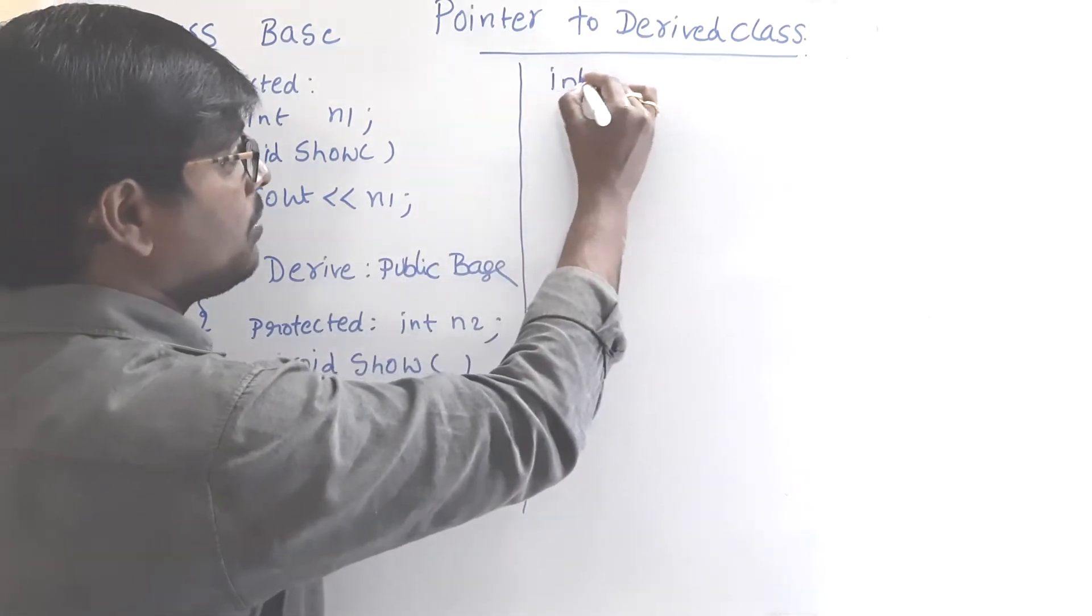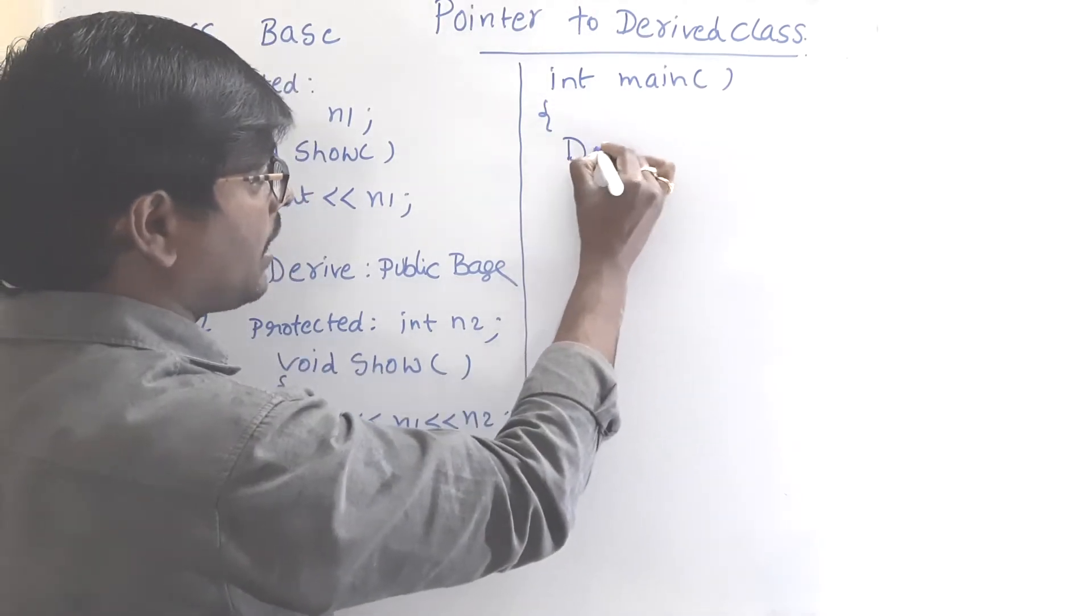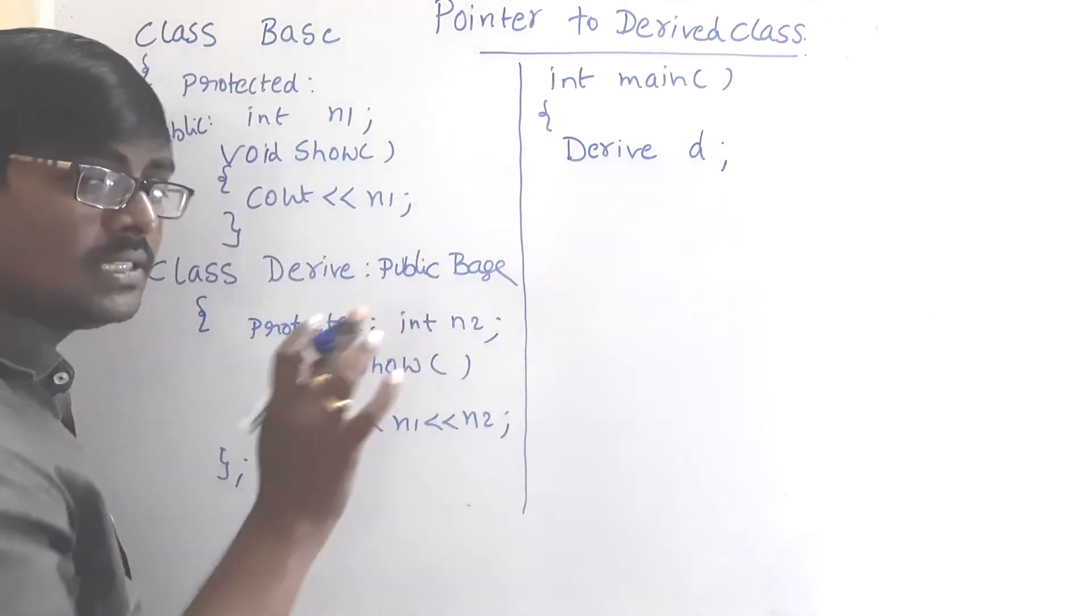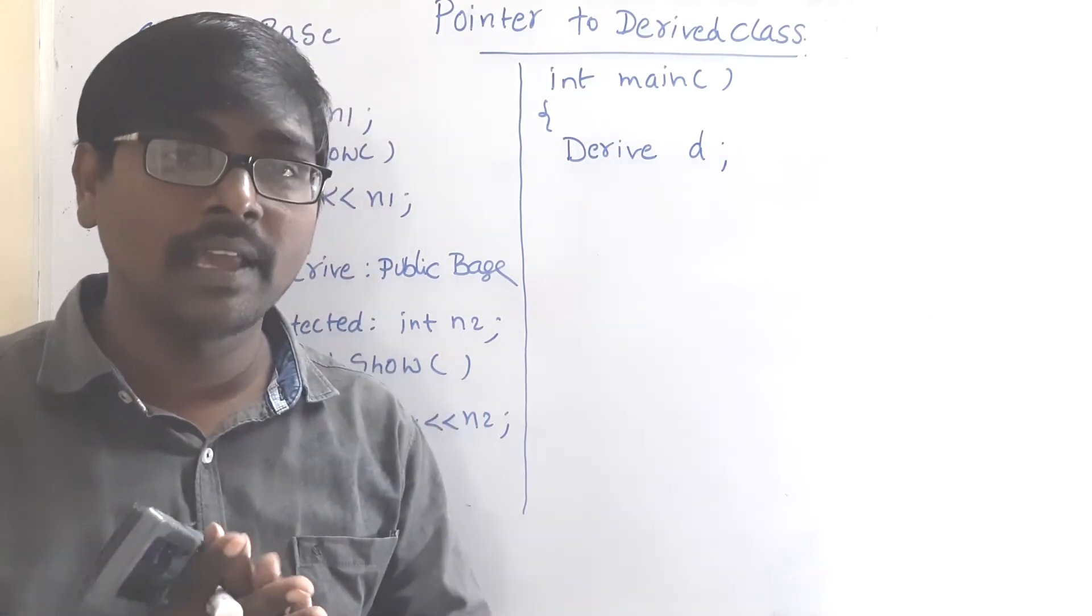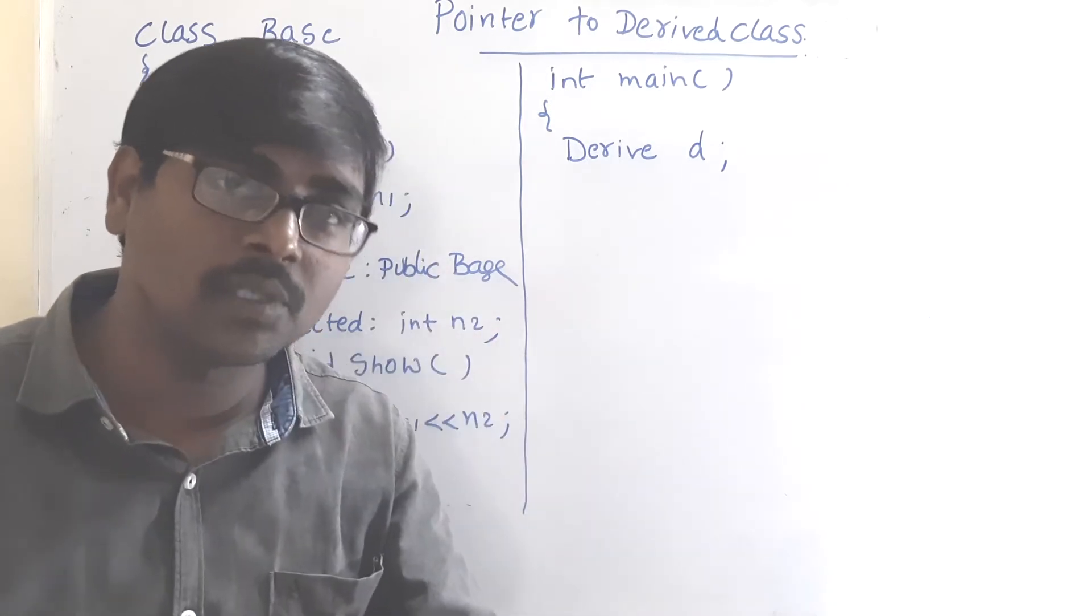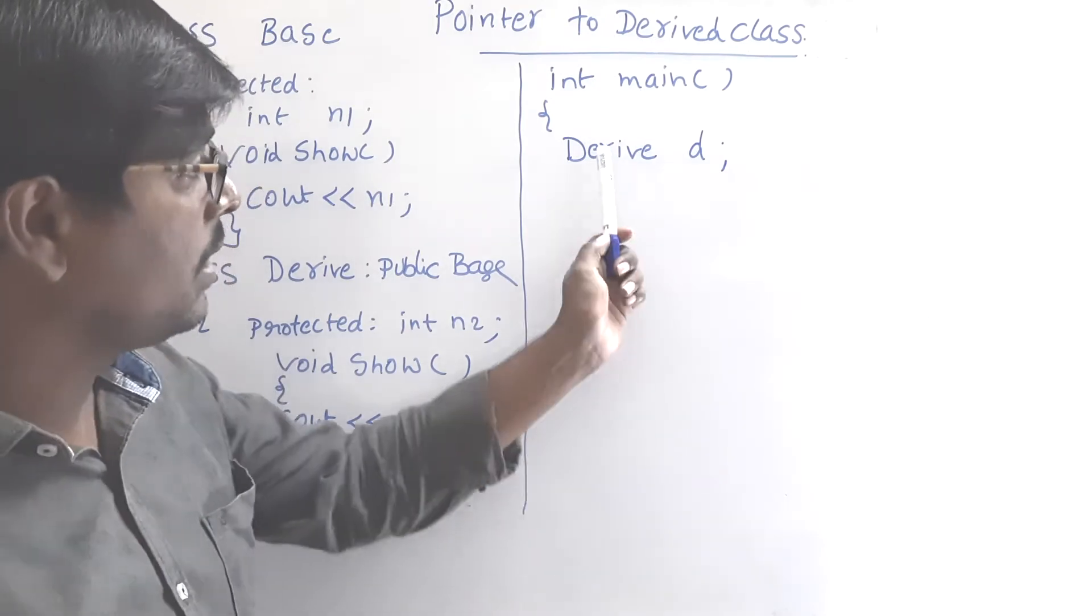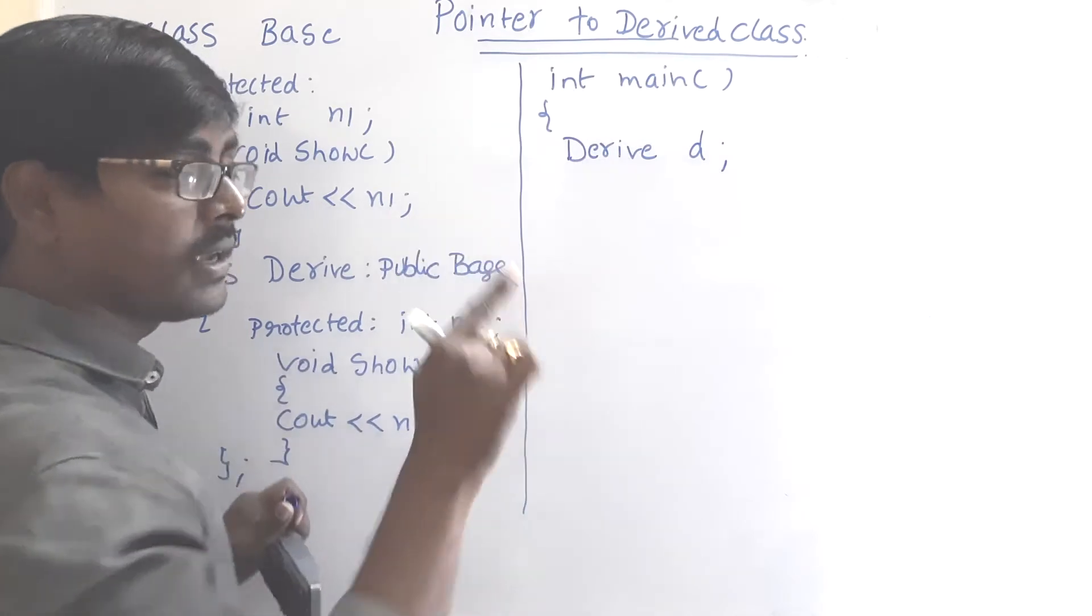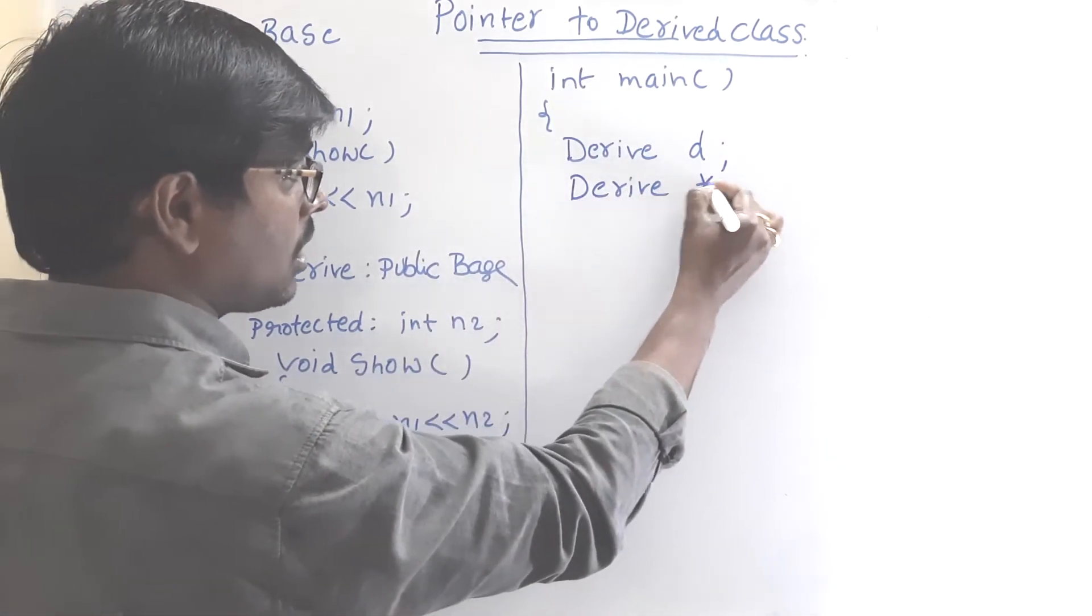So the main important thing is int main, derive d. Here d is an object of the derived class. Remember one thing, generally we are declaring an object for child class. Why? By using child class object, we can access the members of the parent class along with their own members. Now pointer to, the question itself is, we are creating a pointer to the derived class. So derive star p. Here p is a pointer of the derived class.